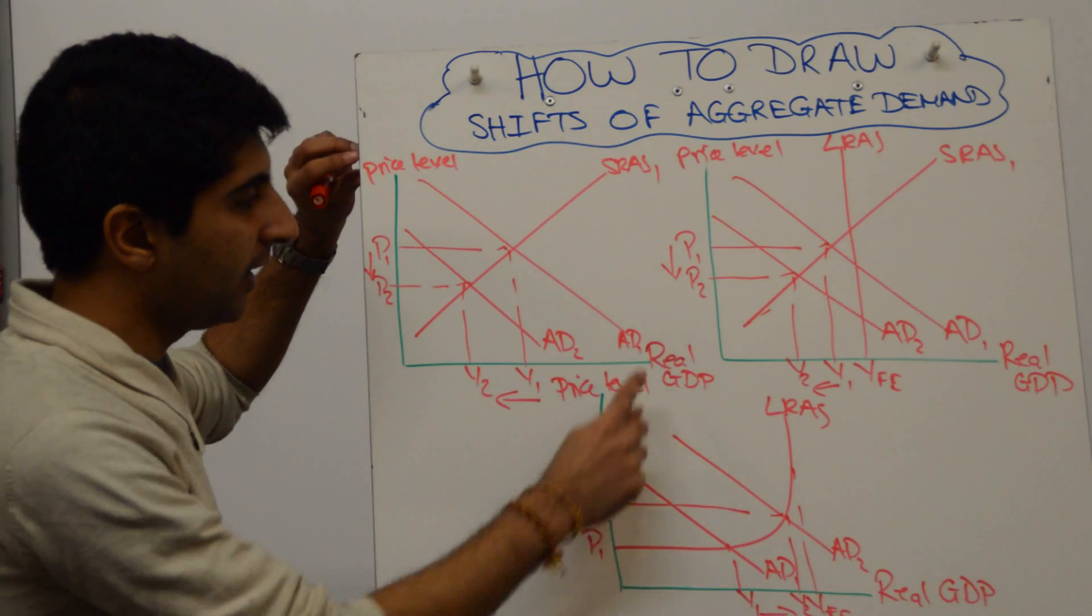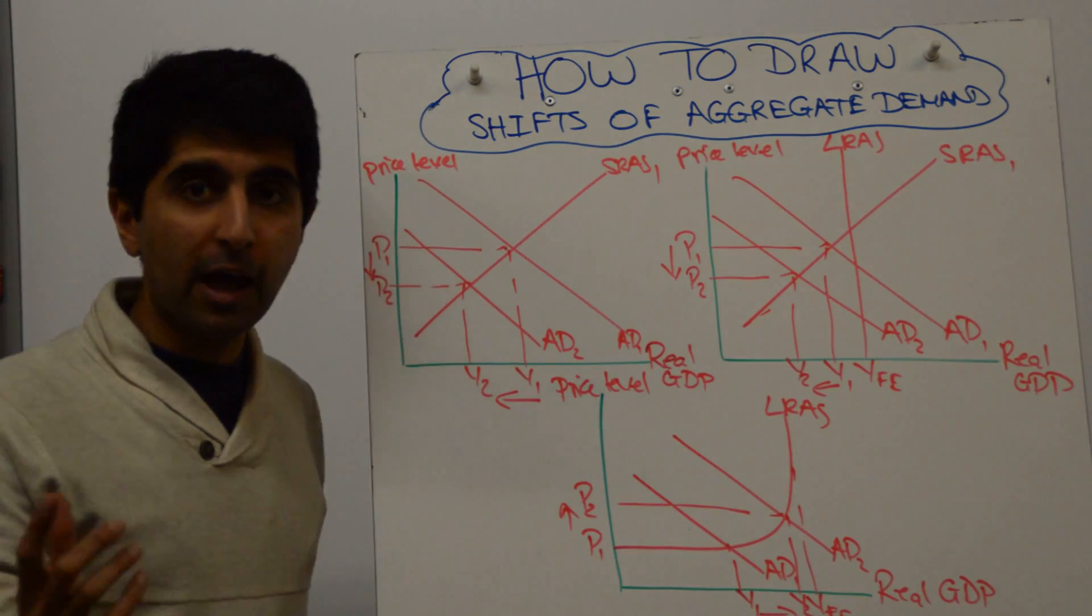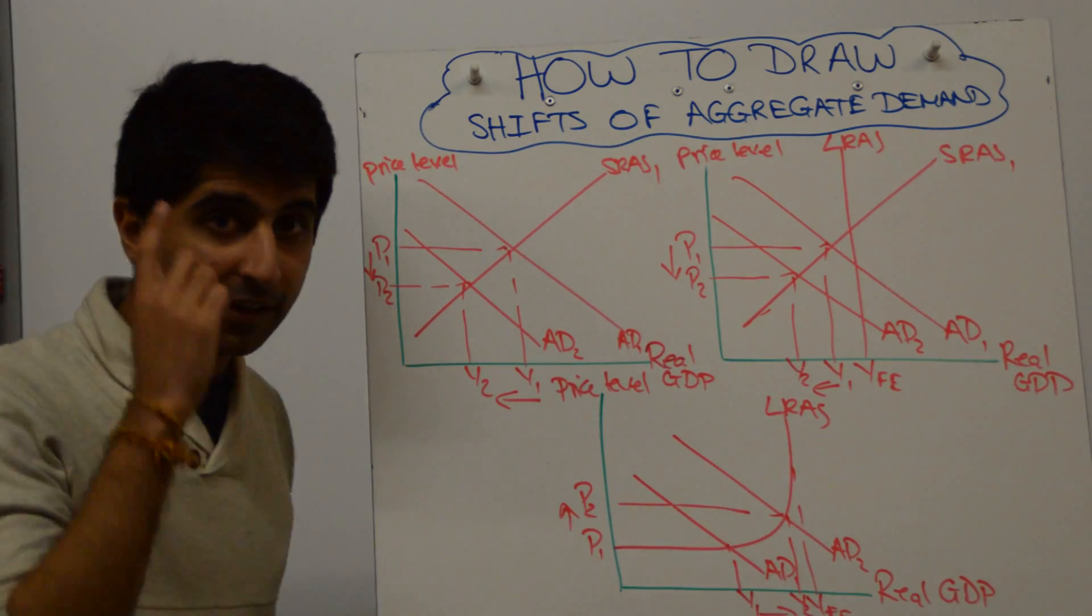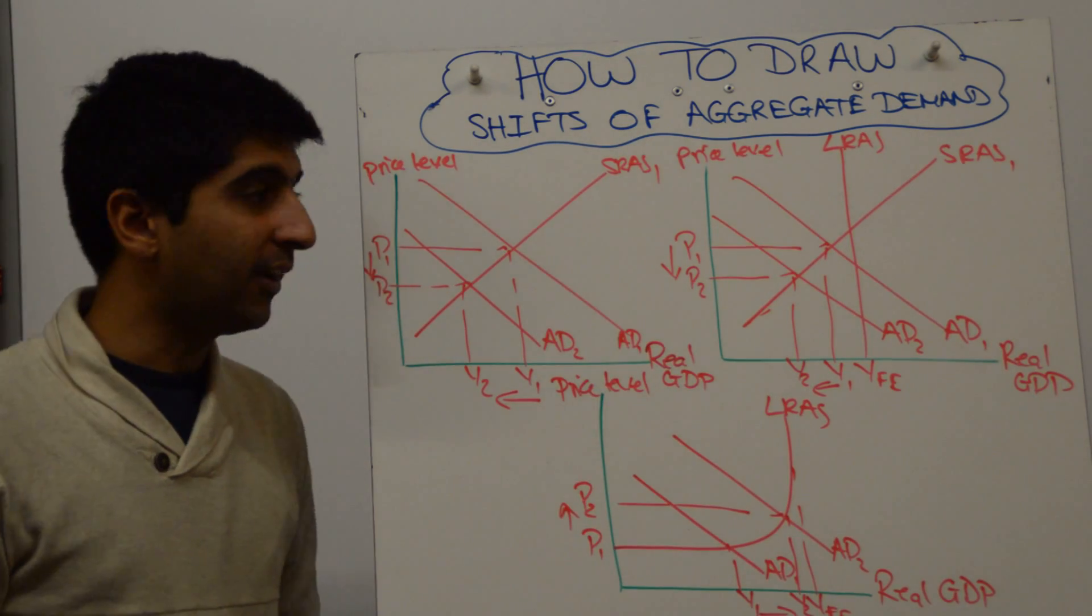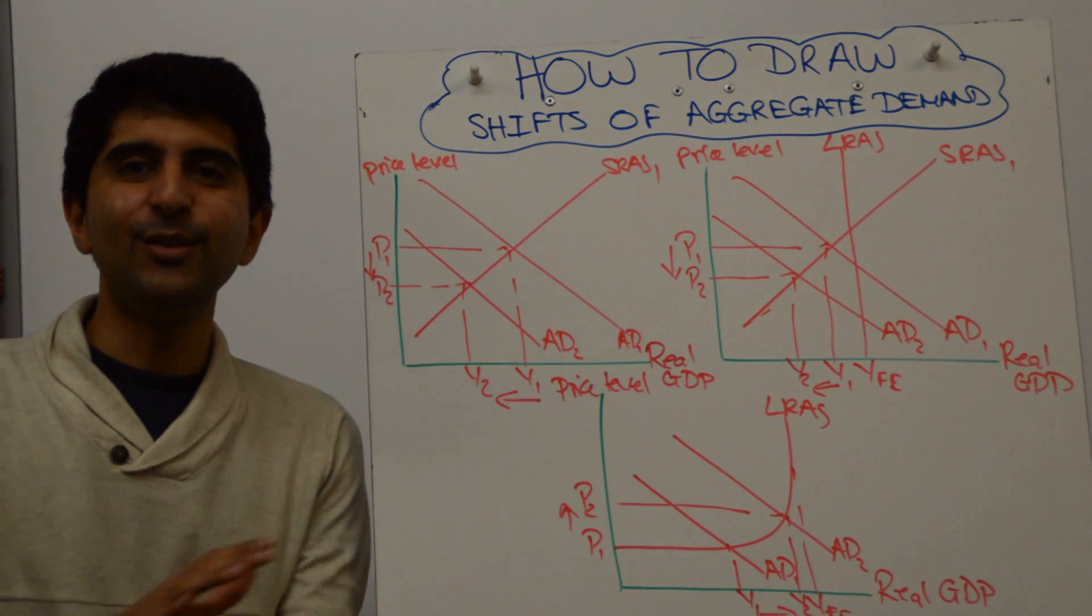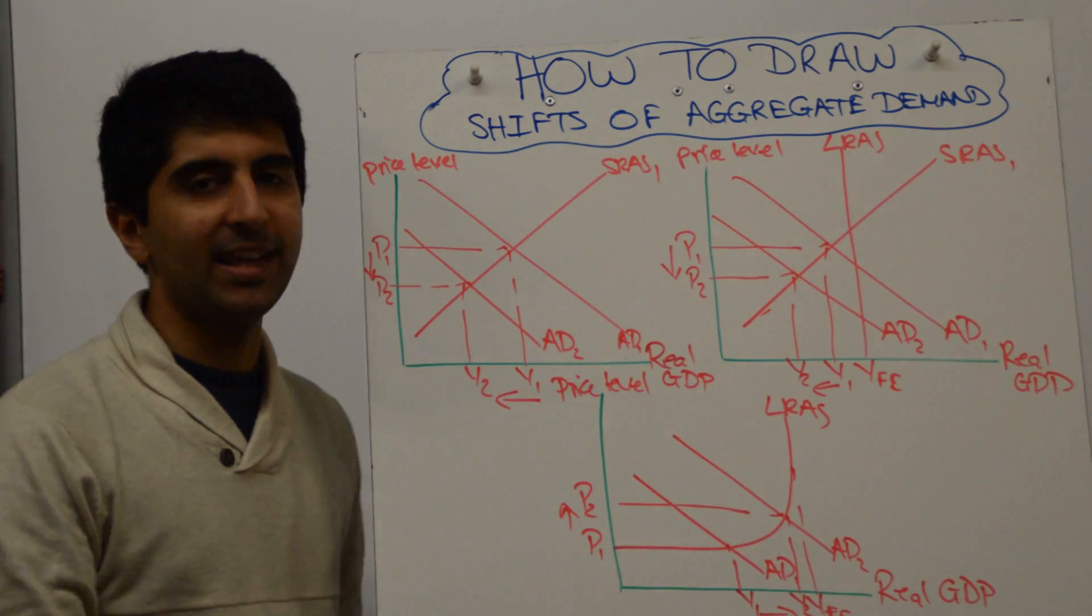Have we labeled our axis? Every time. Yes we have. Have we labeled all of our curves? Always check that. Yes we have. Have we labeled our equilibria? Always check that. Yes we have. You mess any one of those up guys, you lose all your marks. Horrible thing to do. But we haven't done it yet.